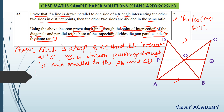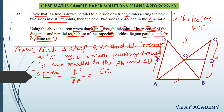Now we have to prove that the line drawn passing through the point of intersection of the diagonals and parallel to the base divides the non-parallel sides in the same ratio. Here the non-parallel sides are BC and AD. So we have to prove that DP divided by PA is equal to CQ divided by QB.